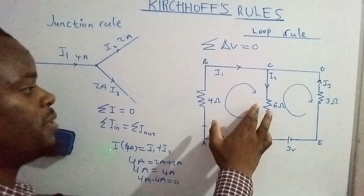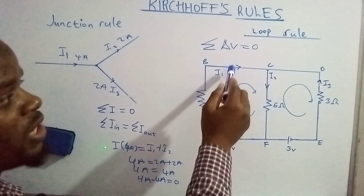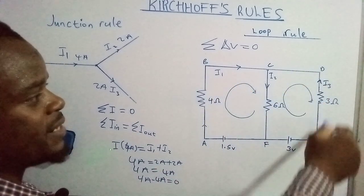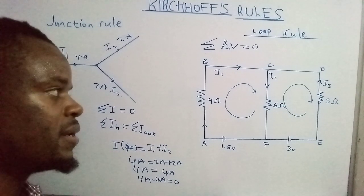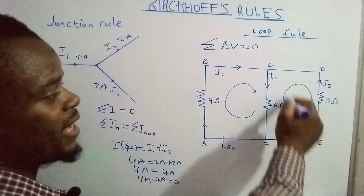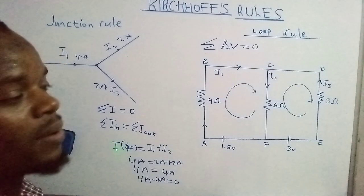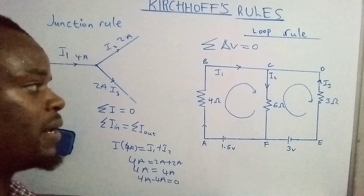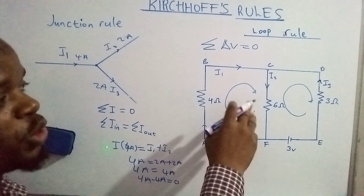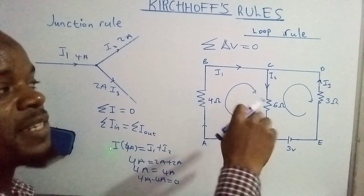First, you consider the flow of current in the electrical circuit. You check the arrows in the diagram — current is moving in a particular direction. You then come up with an imaginary direction in which you feel current is flowing, which could be clockwise or anti-clockwise. When you choose an imaginary direction, you must adhere to it throughout.